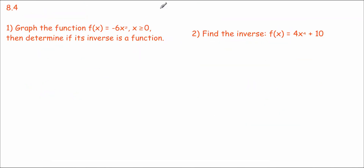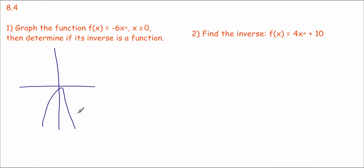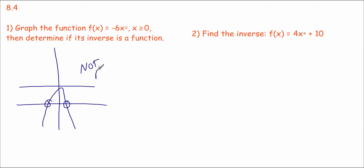8.4: graph the function and determine if its inverse is a function. The function graphs like this. To check if the inverse is a function, use the horizontal line test — if a horizontal line meets the graph in more than one place, the inverse is not a function. It does meet in more than one place, so the inverse is not a function.